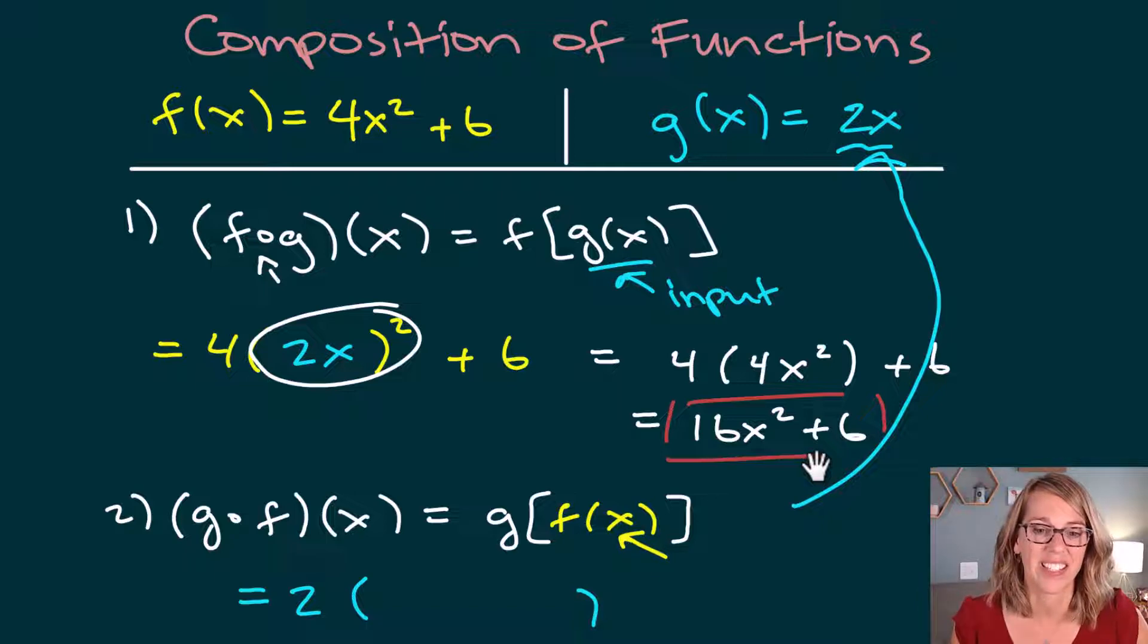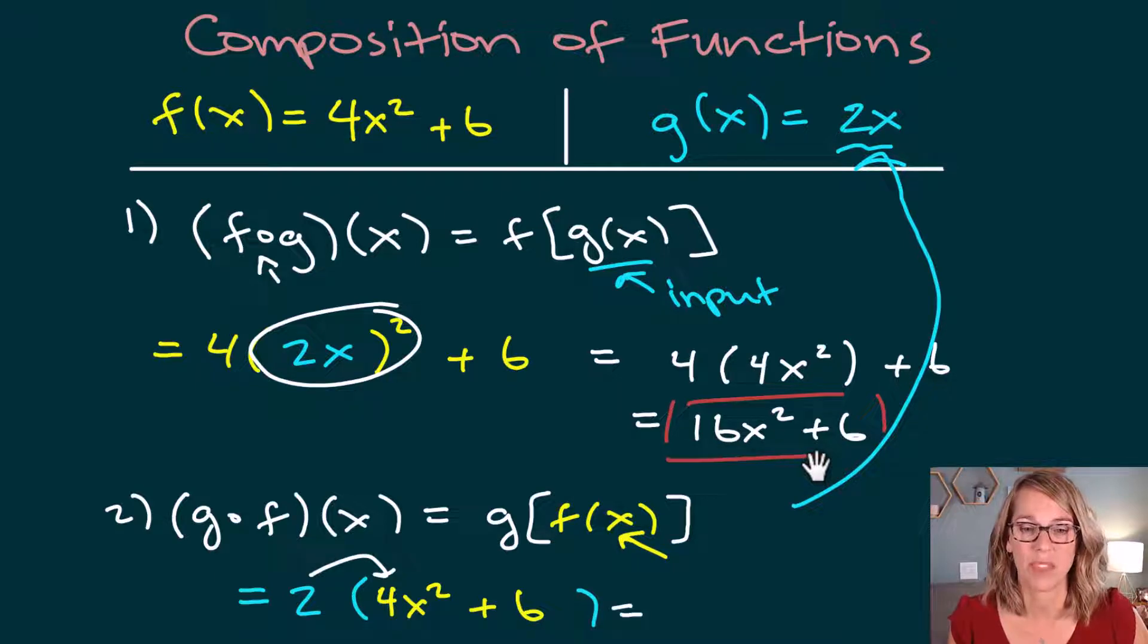f(x), that's going to be 4x squared plus 6. To finish this one off, I've got to distribute that 2. 2 times 4x squared, 2 times the 4 is 8x squared, 2 times the 6 is 12. So plus 12, and there is my answer.